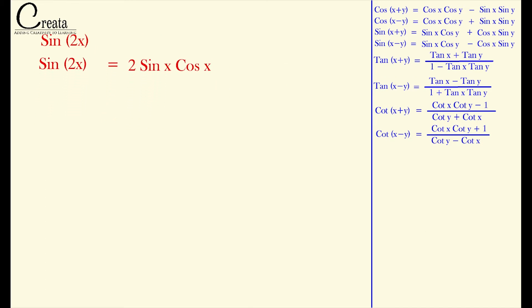Now moving further, if we divide this by 1, nothing will change. And we know the trigonometric identity that sin²θ + cos²θ = 1. So we can replace this 1 with our trigonometric identity. Can we? Yes, we can.